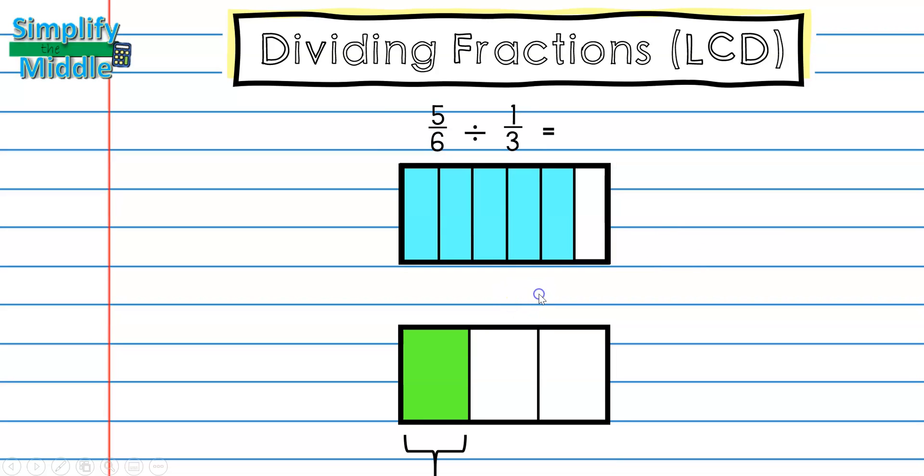Here I notice that this piece and these two pieces are the same size. That means that two pieces is going to represent one-third, so for this problem I'm looking for groups of two.